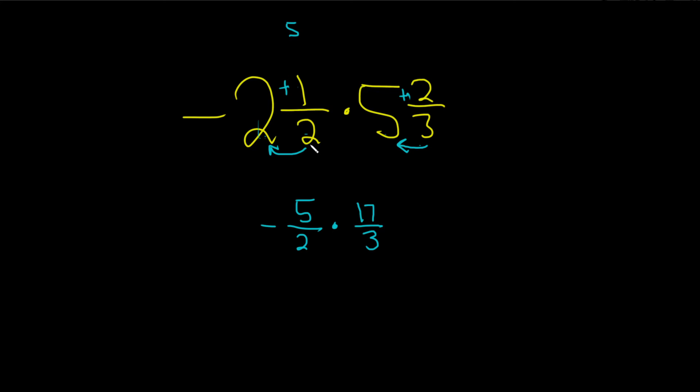Let me maybe show a little bit more work here. 2 times 2 is 4. And then 4 plus 1 is 5. 3 times 5 is 15. 15 plus 2 is 17. So you multiply these, and then you add the top number. And then you always write it over the number on the bottom.